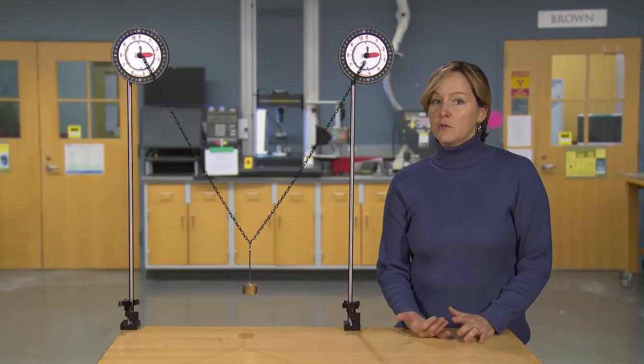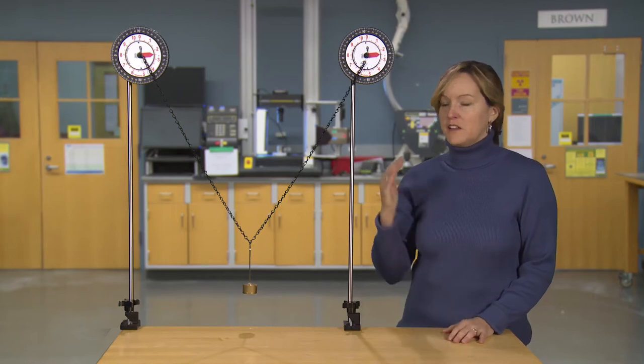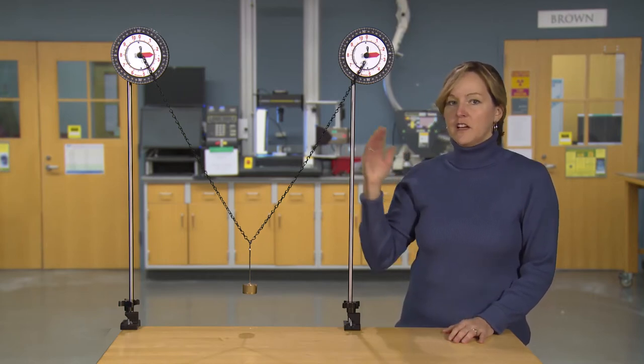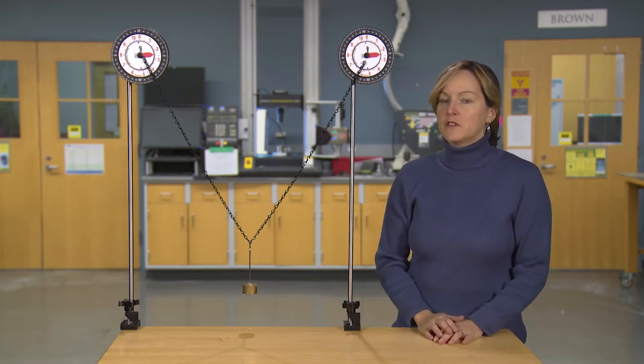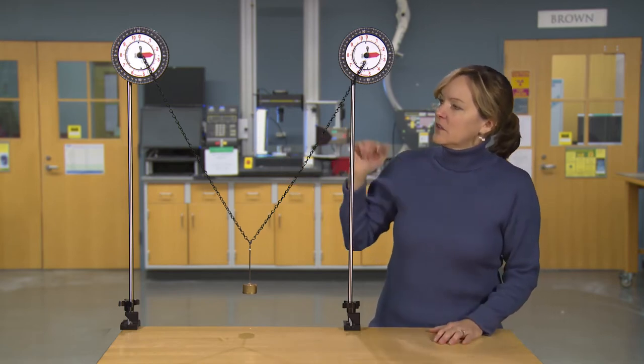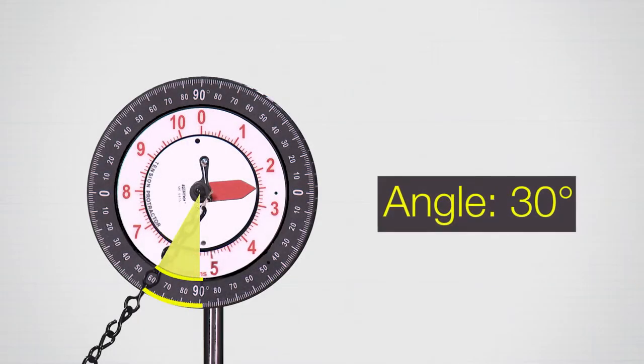So what did you find? The goal, remember, was to figure out what happens as I change this geometry. So if I change the angle of my funicular form, what happens to the forces in the funicular form? This was our original configuration, and we were reading that it was at 30 degrees from vertical, and the force in the funicular form was two and a half newtons.